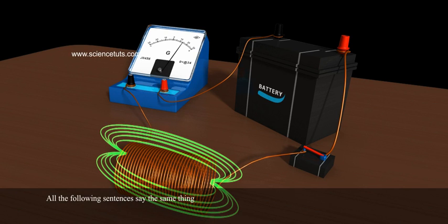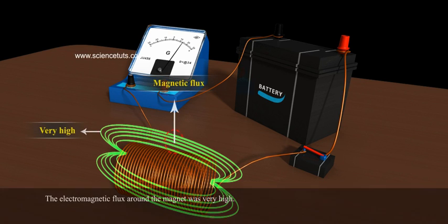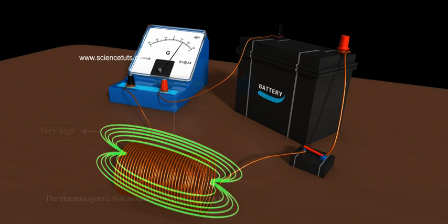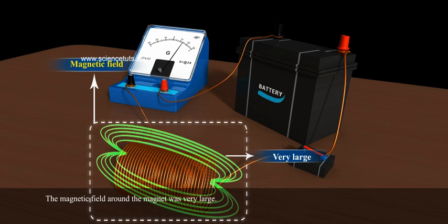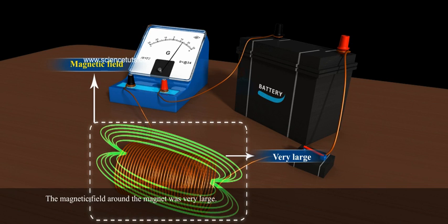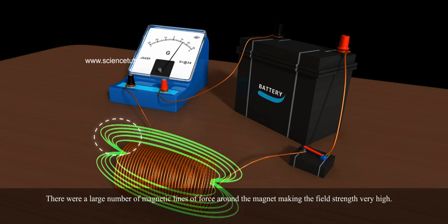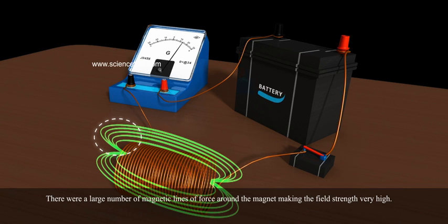All the following sentences say the same thing. The electromagnetic flux around the magnet was very high. The magnetic field around the magnet was very large. There were a large number of magnetic lines of force around the magnet, making the field strength very high.